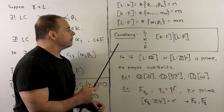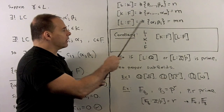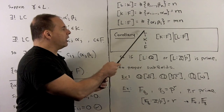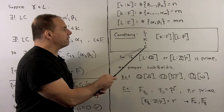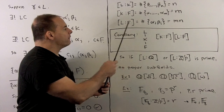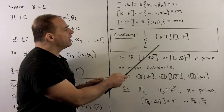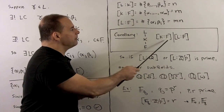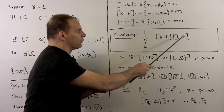An immediate corollary: in a field tower where L extends K extends F, all finite extensions, we have that [K:F] divides [L:F].